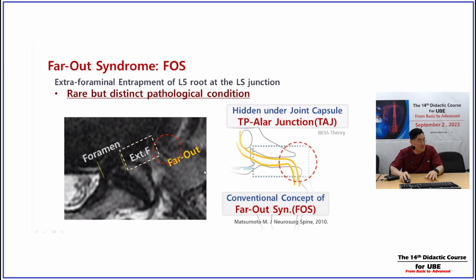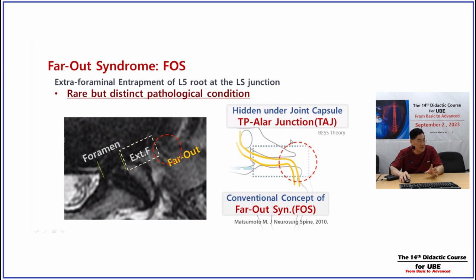From an endoscopic view, the foramen pathology involves SAP and the disc. The extraforaminal area is wide and open, so extraforaminal pathology is mostly only extraforaminal disc. Far-out syndrome at L5S1 happens at the TP-ala junction. We should differentiate pathologies: the extraforaminal area has only a disc problem, while at L5S1 the far-out area involves a distal TP and ala junctional problem — a bony pathology.